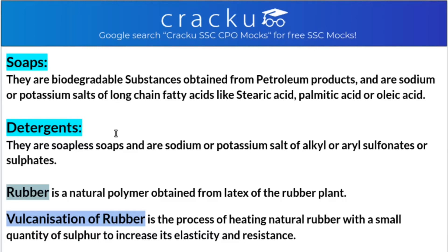Detergents are sodium or potassium salts of alkyl or aryl sulfonate or sulfate. In soaps, they were sodium or potassium salts of long-chain fatty acids, but in detergents they are sodium or potassium salts of alkyl or aryl sulfonate or sulfate. Rubber is a natural polymer obtained from the latex of the rubber plant.